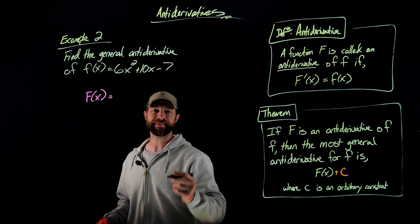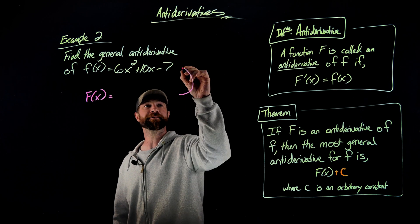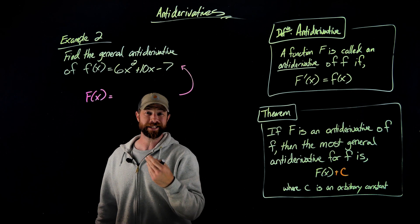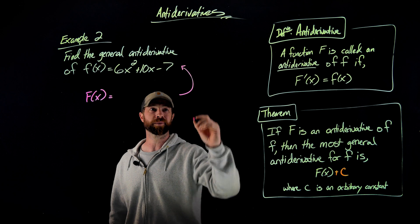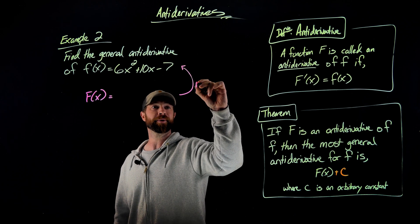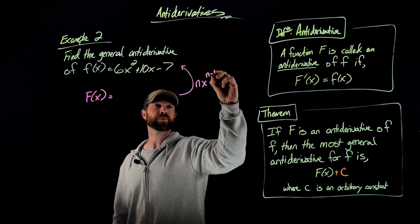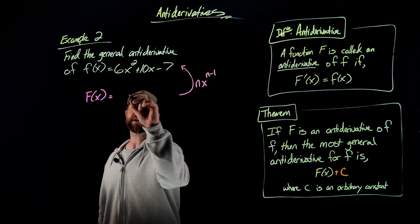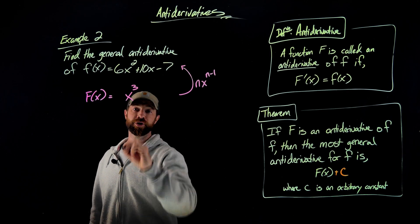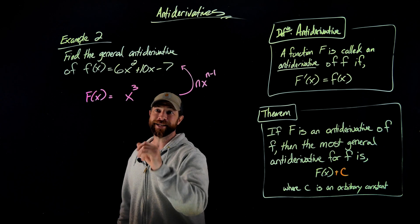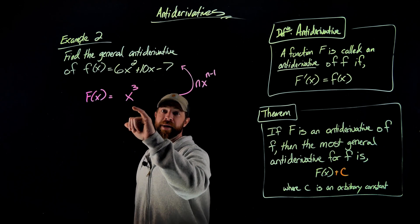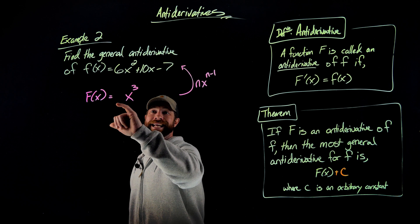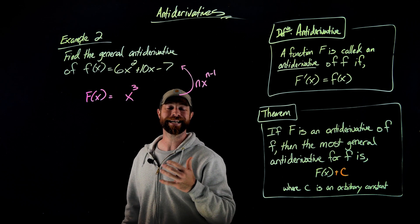My first question is, what term would I put here so when I differentiate, I would get 6x²? When I'm doing this, I need to think about differentiation. When I differentiate, what do I do with these polynomial terms? I use the power rule, where I take an exponent, I bring it down, and then I subtract one away. So the first thing that I know is that right here, I'm going to want an x³ term, because when I differentiate the x³ term, I'm going to bring down the 3 and take one away from the exponent to make it an x².